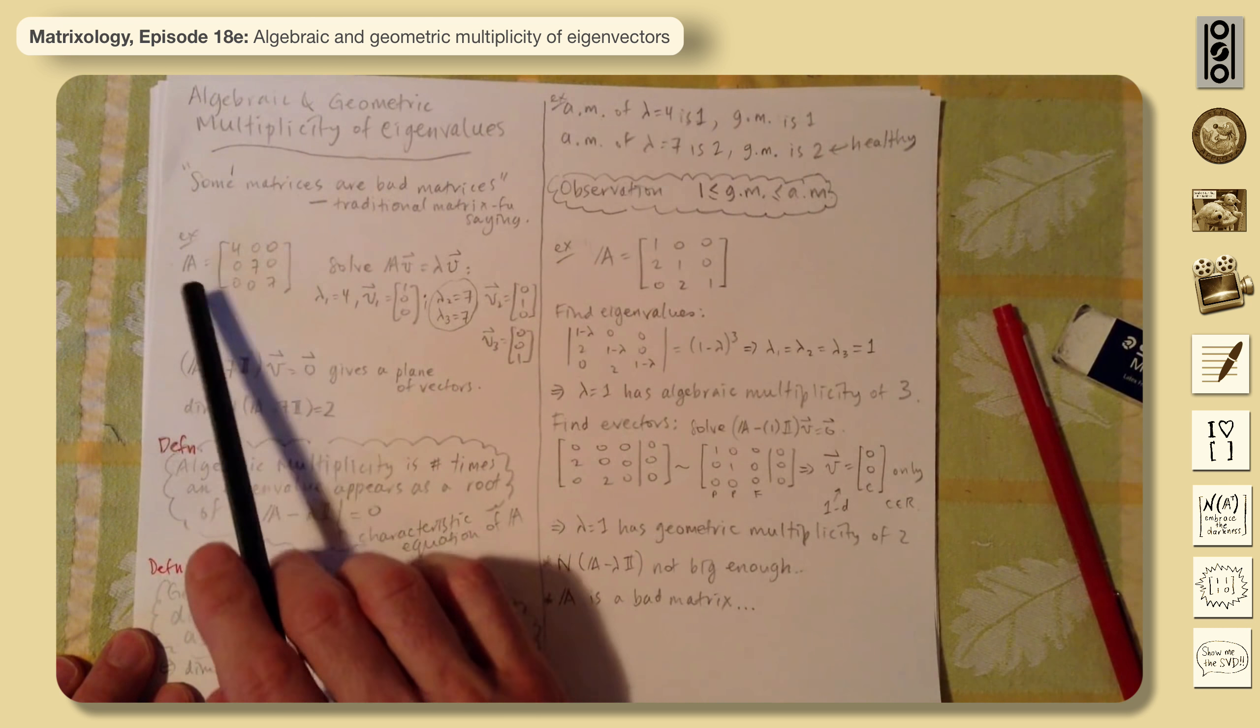And for the matrix to not have a spanning set of eigenvectors. There you go.